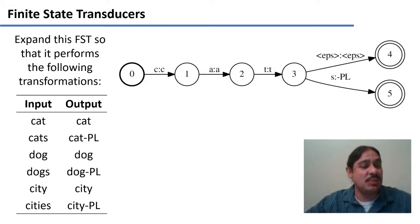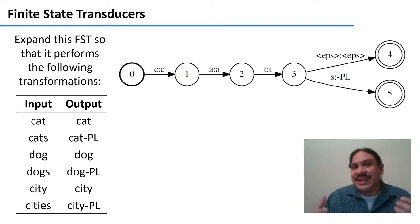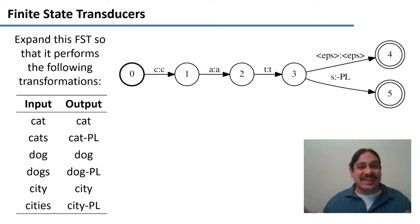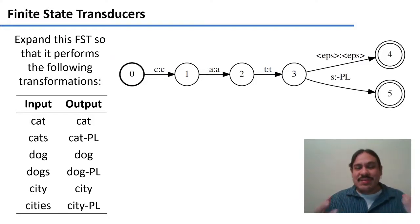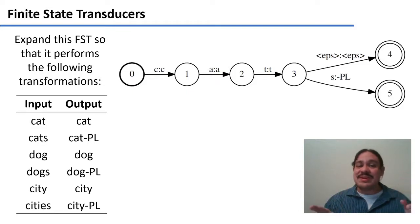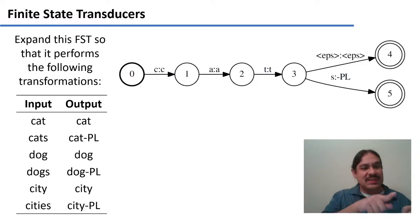My suggestion for this would be to take a piece of paper and draw it first. Obviously we'll get into the programming, but before we program anything — as with any software design — you need to think about what you're going to do. Grab a piece of paper, a pen or pencil, and draw the finite state transducer that will make all those transformations.